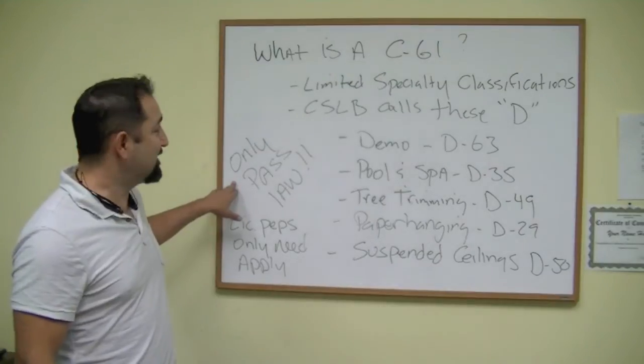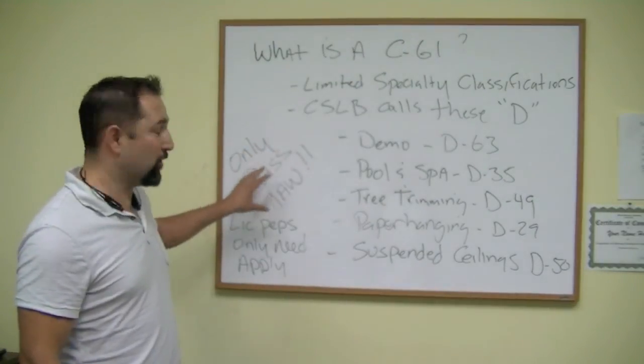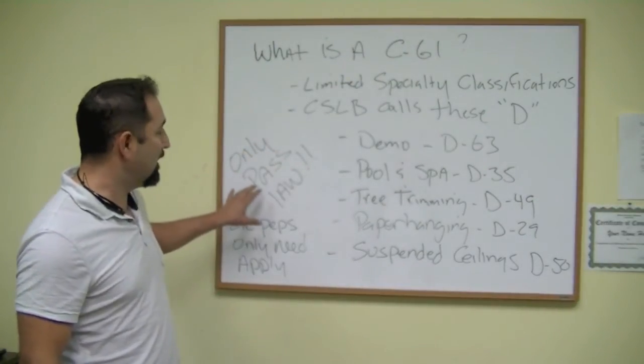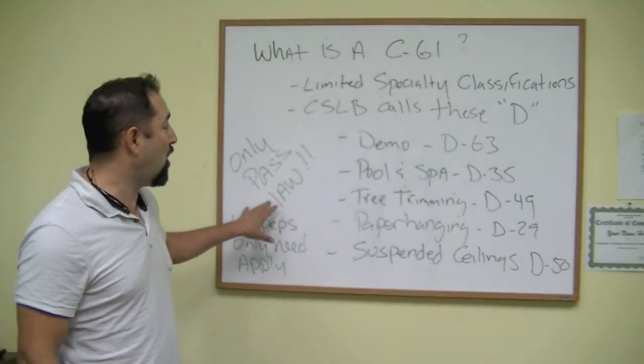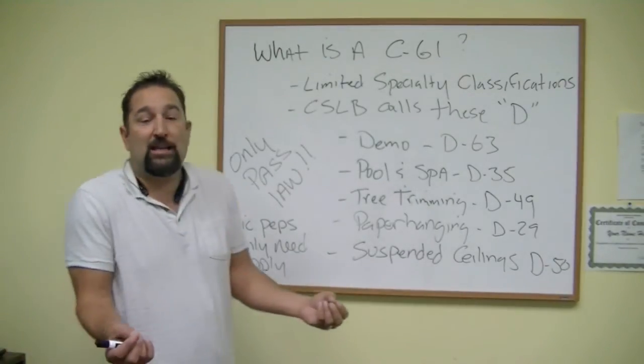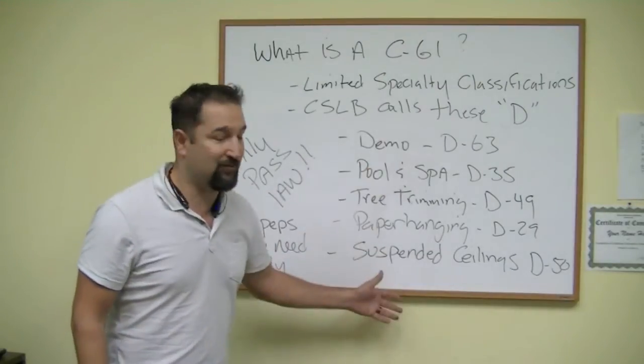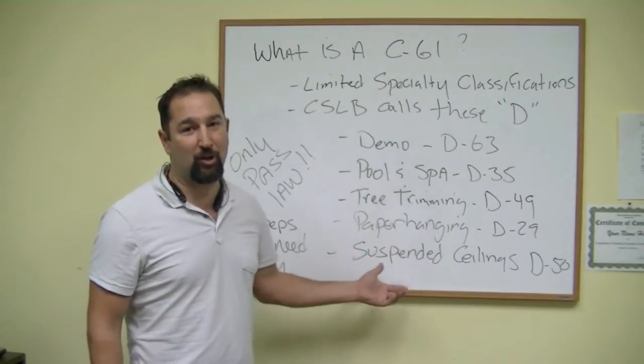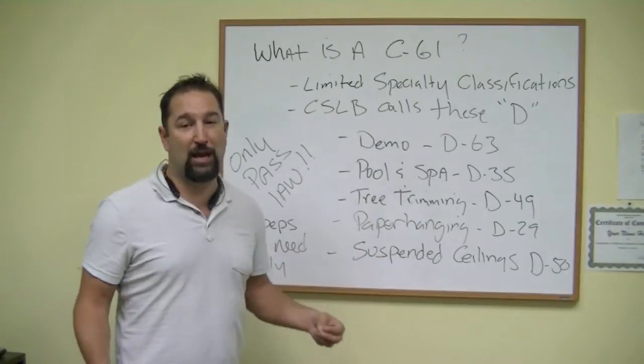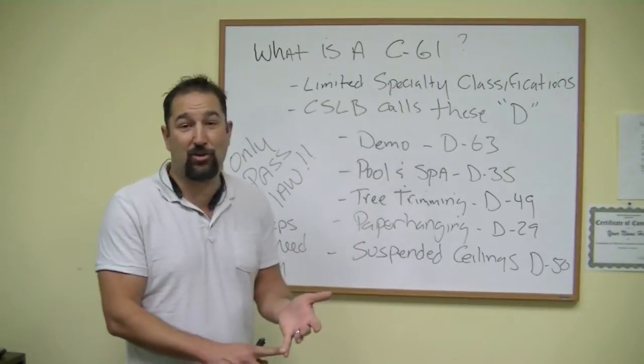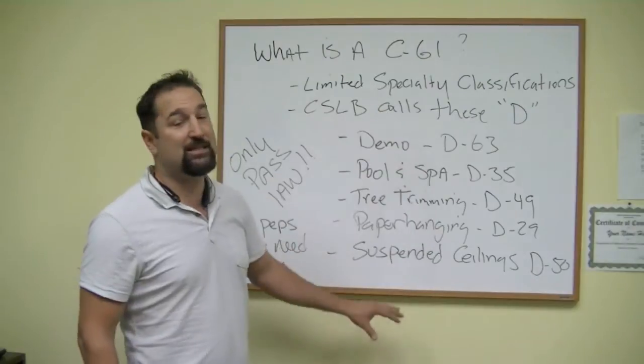Notice right here. Yes, I know. I wrote it a little bit crooked, but that's OK. It says only have to pass the law. What does that mean? There is no trade manual or test that you have to take to get any of these. You only have to pass the law. They haven't written any trade material, so there's no state trade test for these D licenses.